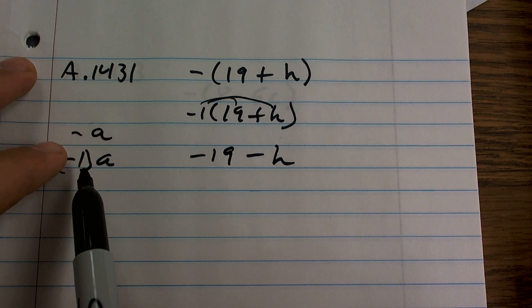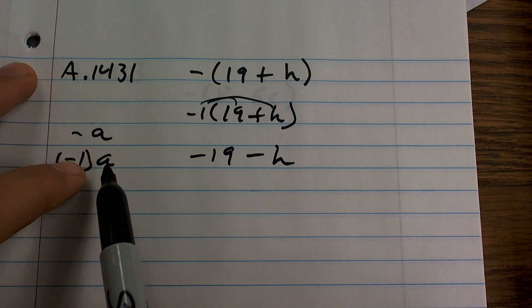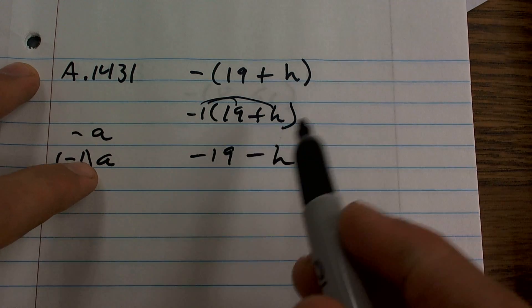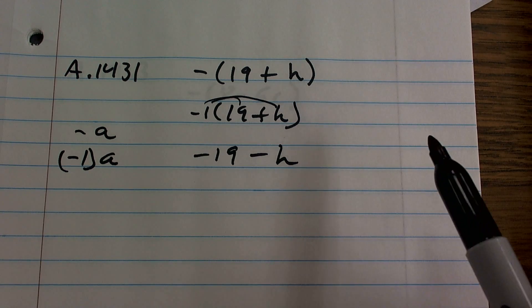You just need to remember that negative a can be rewritten as negative 1 times a. And then you're home free as long as you remember the distributive property, which we've been making all these videos on.